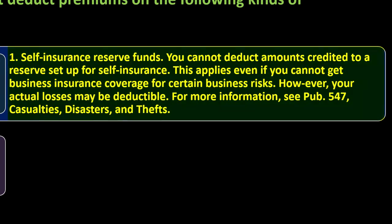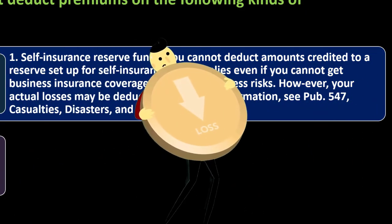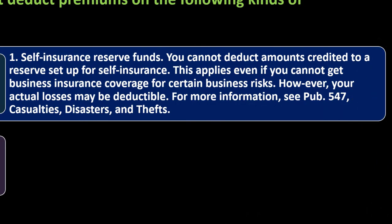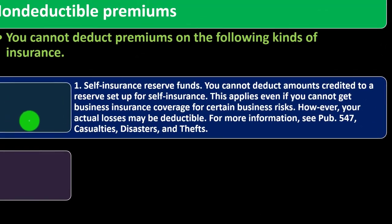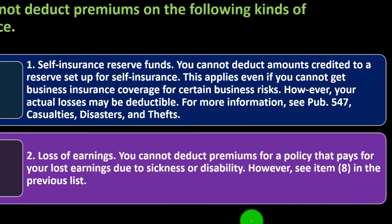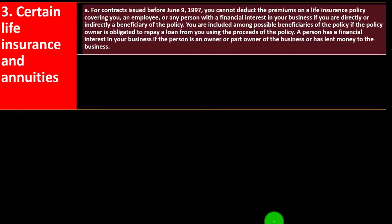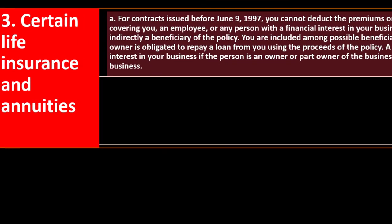This applies even if you cannot get business insurance coverage for certain business risks. However, your actual losses may be deductible. For more information, see Publication 547 — Casualties and Disasters. Number 2: loss of earnings. You cannot deduct premiums for a policy that pays for your lost earnings due to sickness or disability. However, see item 8 in the previous list.